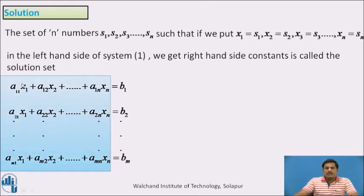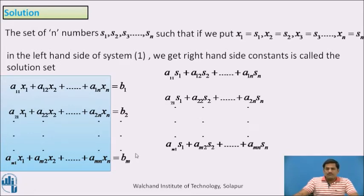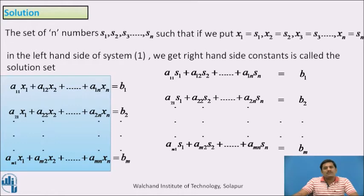That is, substituting x1 as s1, x2 as s2, and xn as sn in each equation on the left-hand side of the system — if the first equation reduces to b1, the second to b2, and the last to bm — then we can say that this set of n numbers forms a solution set for the given system of non-homogeneous linear equations.